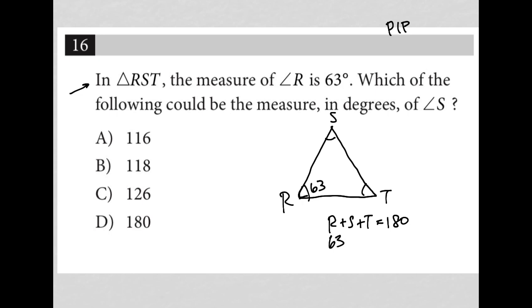So if we know that R is 63, then that becomes 63 plus S plus T is 180. And when I subtract 63 from here, I get that angle S plus angle T must be equal to 117 degrees. So in total, S and T can be no larger than 117.